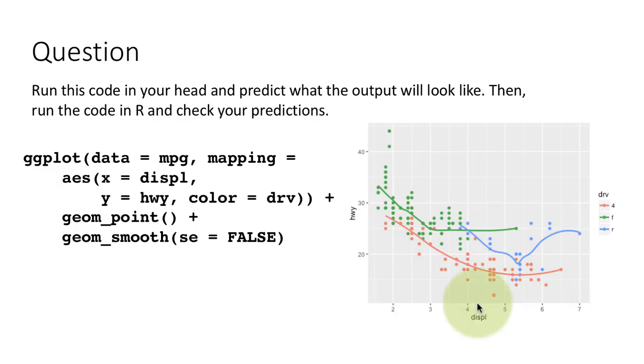So this much we could have predicted. Of course, we don't know the actual data, so we can't exactly predict the graph. But we can say the point layer is going to have points of different color. And the smooth layer is going to have not one line, but as many lines as there are values for drive. And the line color is going to be also determined by that. So all of that we can predict just by looking at the code.